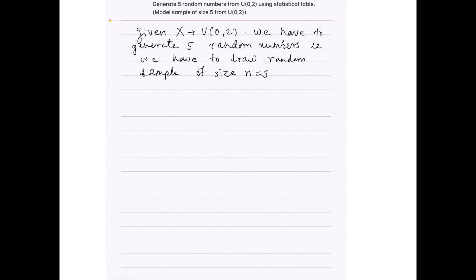Let us start with the answer now. We are given that x follows uniform distribution with parameters a equals 0 and b equals 2. Now, we have to draw random sample of size 5, that is we have to generate 5 random numbers from this distribution.